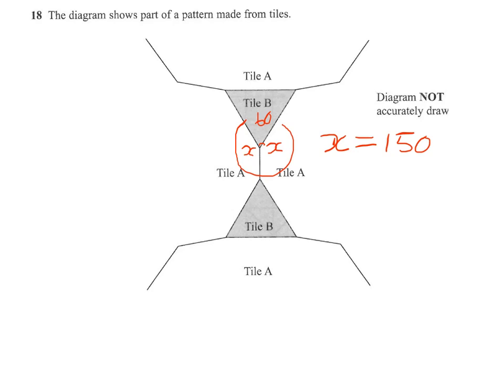Now, if we have a regular polygon where the inside is 150, then we should know that the external angle is 30.